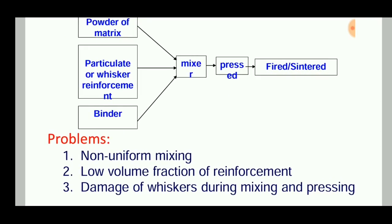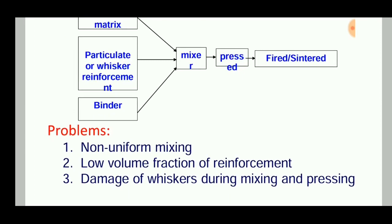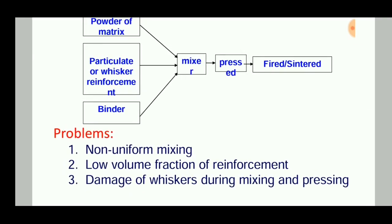Problems in this cold pressing and sintering process include non-uniform mixing of the reinforcement, matrix, and binder due to density differences. For example, in a composite with iron and copper reinforcement, the iron particles are denser than copper, so they settle to the bottom while copper rises to the top surface. This results in non-uniform strength throughout the composite product, and also a low volume fraction of reinforcement.